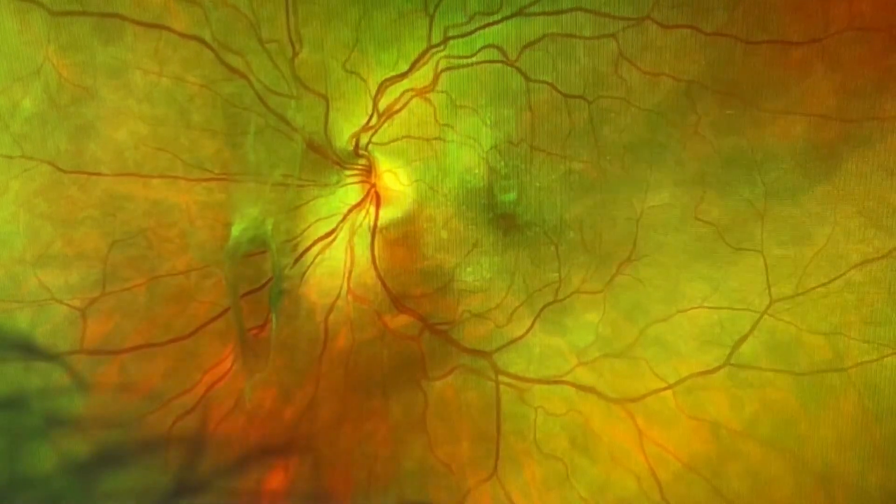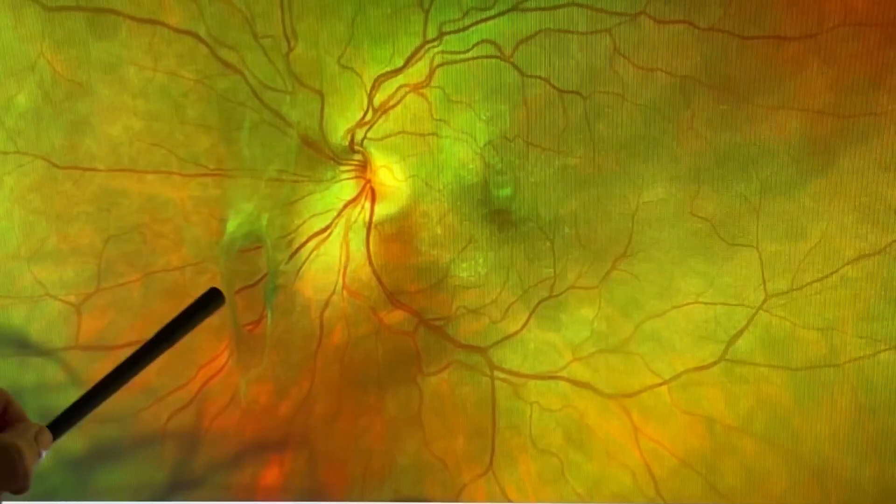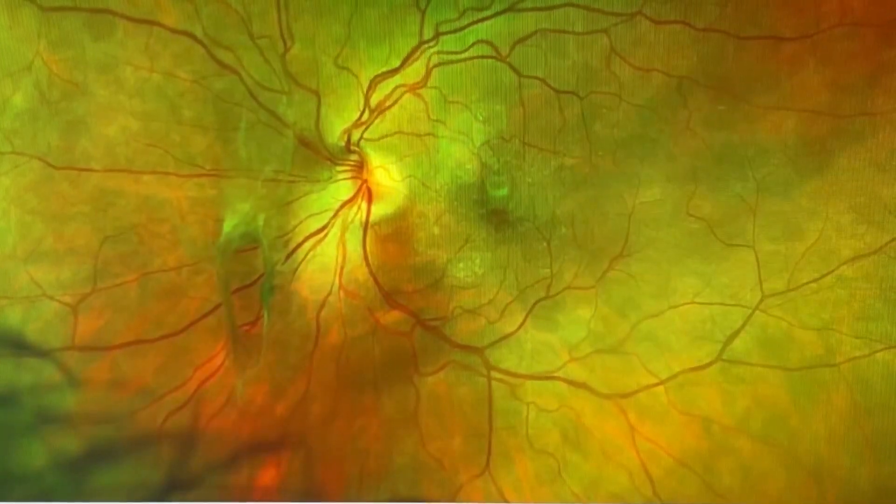This is the optic nerve, the macula, and you can see this very large floater is floating very close to the macula which gives us our very best vision.